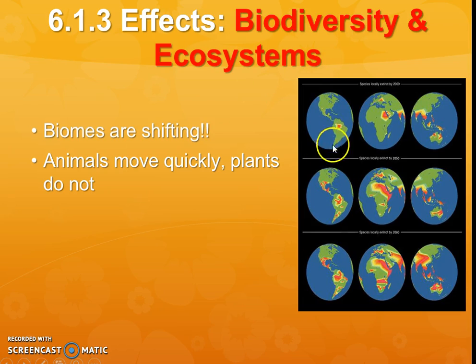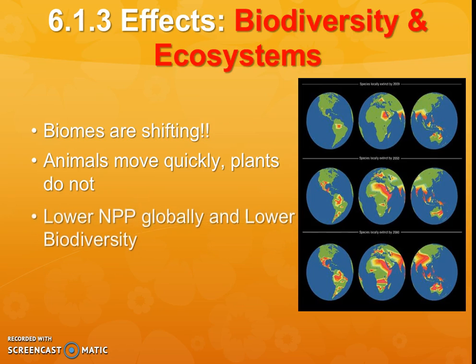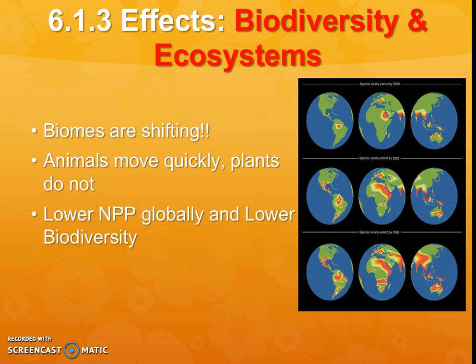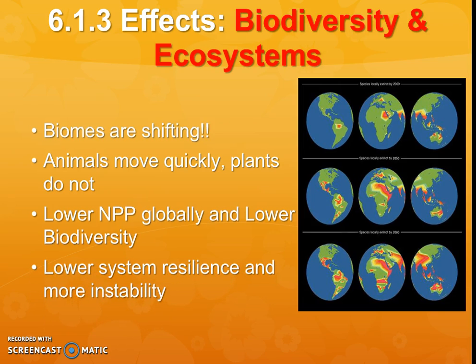Biomes like the tropics — that's why we might see those tropical pests and diseases shift into higher areas than they're currently in, where they're currently stuck in the tropical zone near the equator. Overall, we might just have lower net primary productivity and lower biodiversity because it's just getting too hot for things to survive and survive well. The stability is decreasing, leading to lower system resilience and more instability.